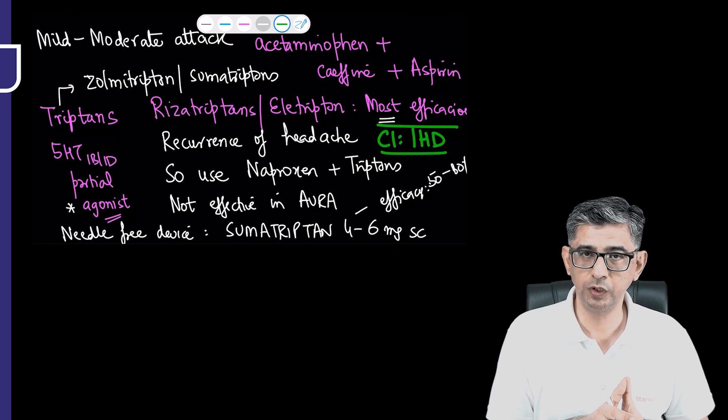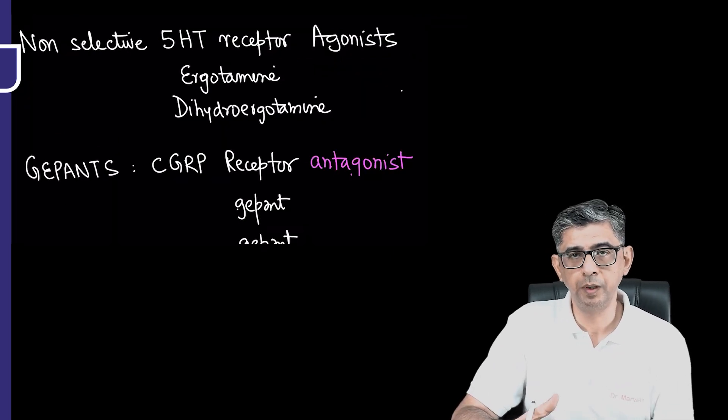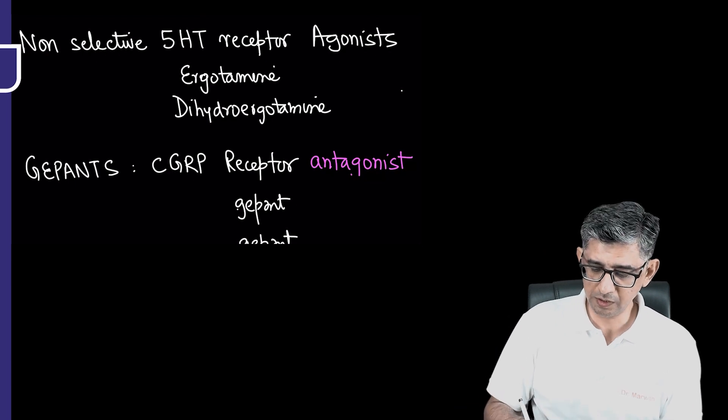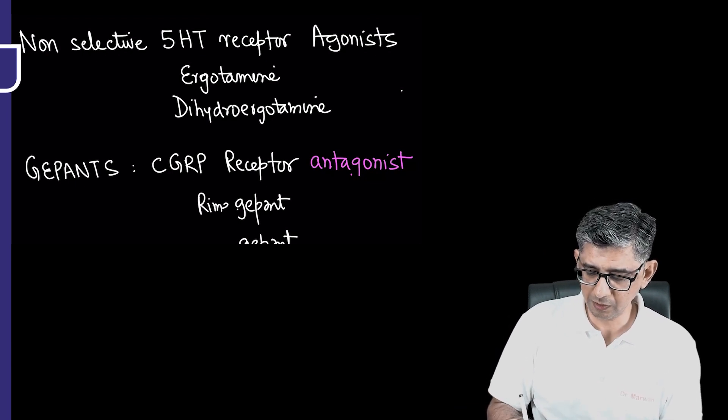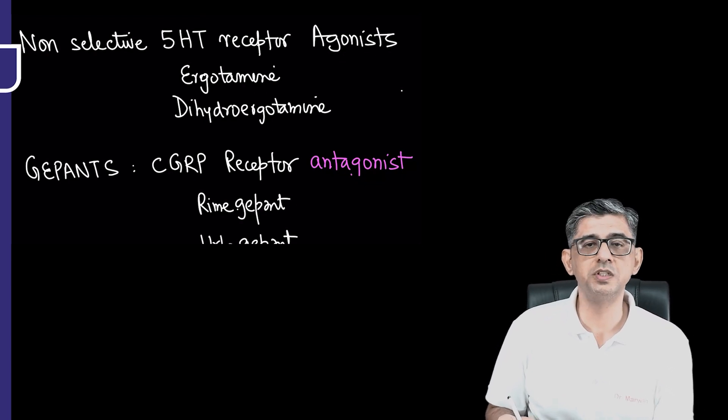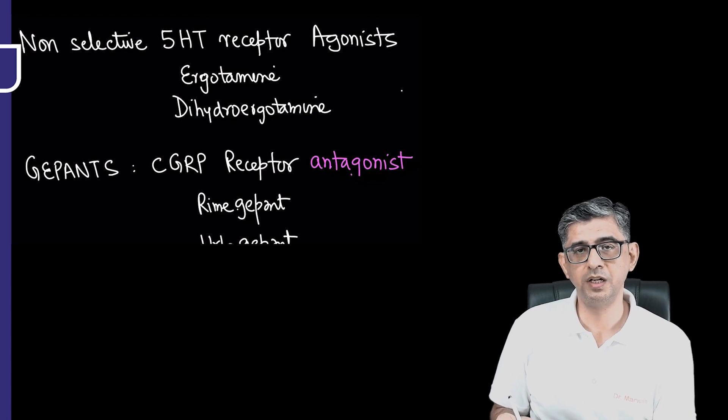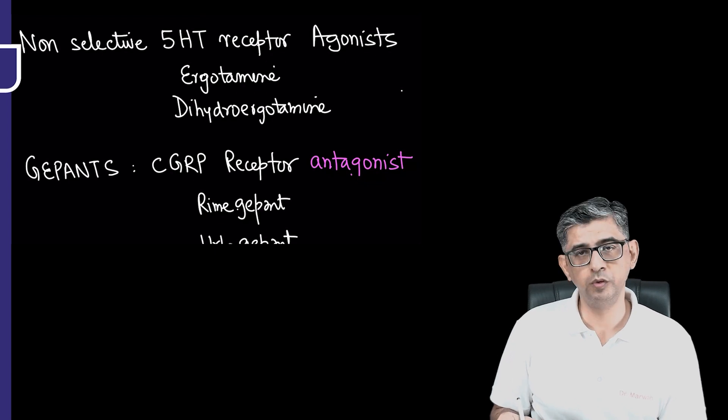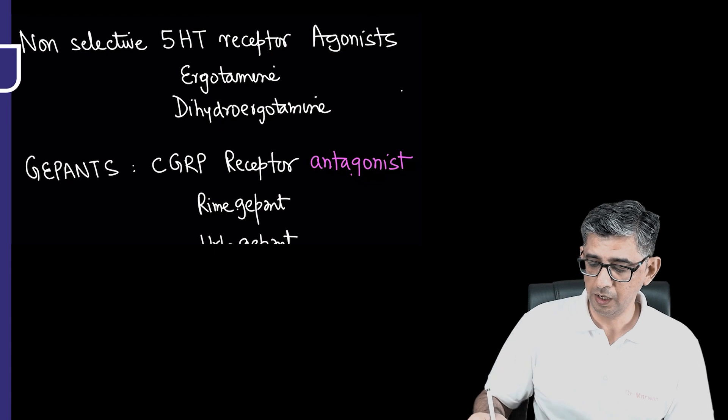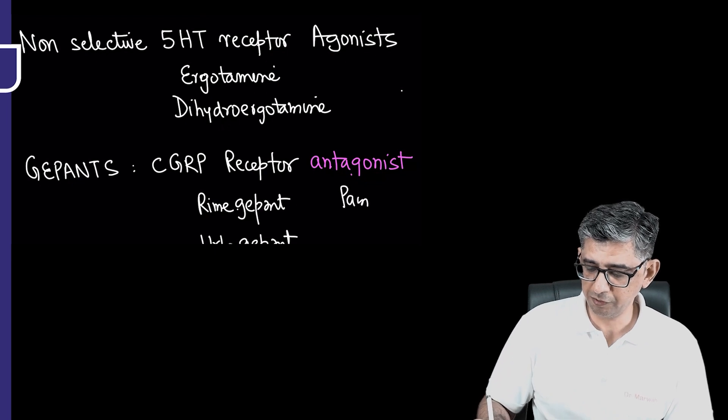The next drug category to be remembered for alleviation of symptoms in a severe case of migraine would be gepants. There are two of them: rimegepant and ubrogepant. The advantage of these molecules is that they are blocking the effect of CGRP on its receptor. The calcitonin gene-related peptide is not being allowed to act on its receptor, therefore the trigeminovascular stimulation will not be able to occur.